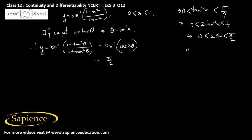Now sin inverse of cos 2 theta can be rewritten using the identity sin inverse x plus cos inverse x equals pi by 2, so sin inverse equals pi by 2 minus cos inverse of cos 2 theta. Since 2 theta lies in 0 to pi by 2, it falls within the principal value branch of cos inverse, which is 0 to pi.